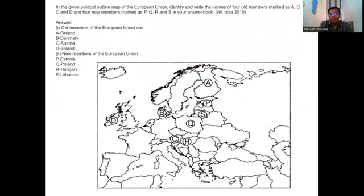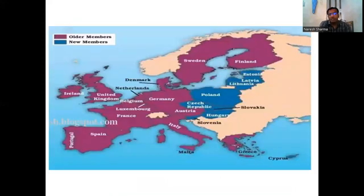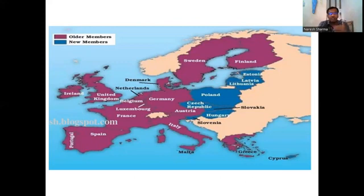The third question: in the given political map, the four older members are marked A, B, C, D and the four new members are marked P, Q, R, S. So A is Finland, then Denmark, Austria and Ireland. And P, Q, R, S are Estonia, Poland, Hungary and Lithuania.